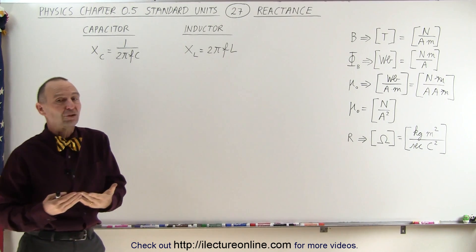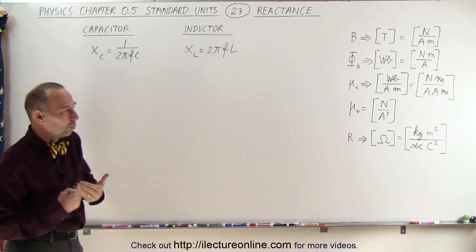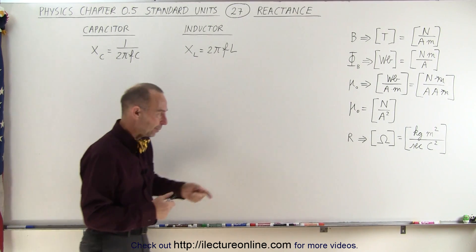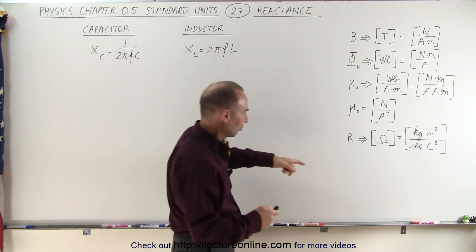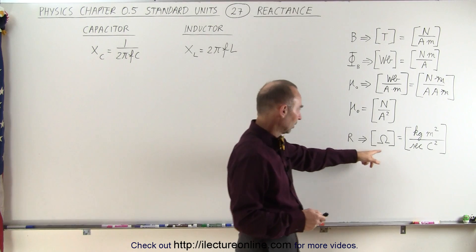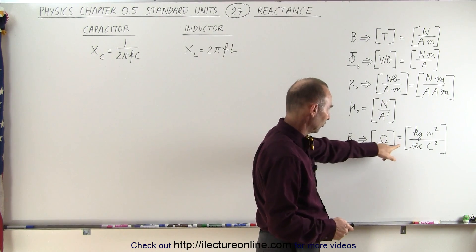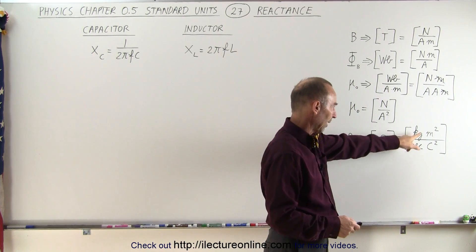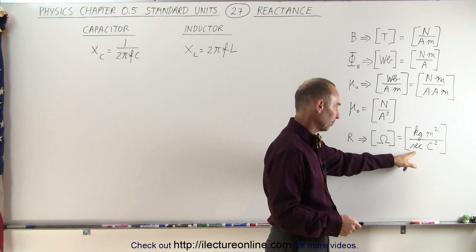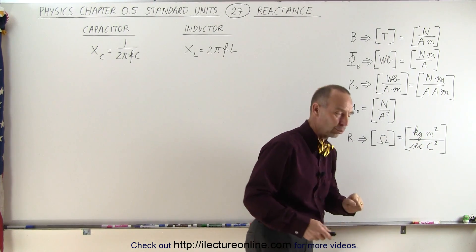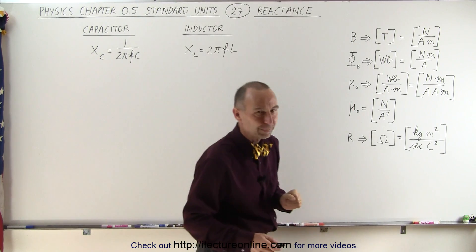The units of reactance should be ohms. Here we have the definition of ohms — that's the units for resistance, which is equal to kilograms meters squared per second per coulomb squared.